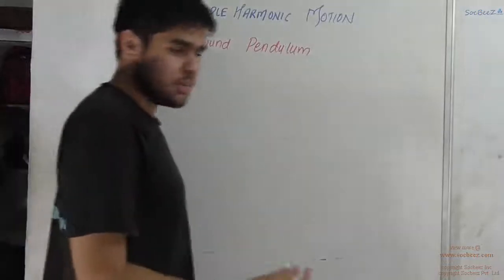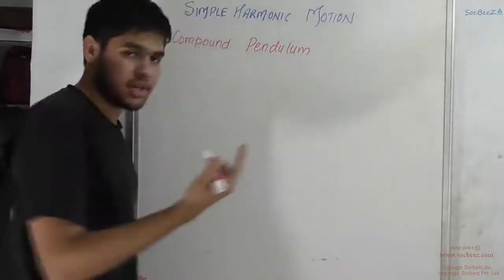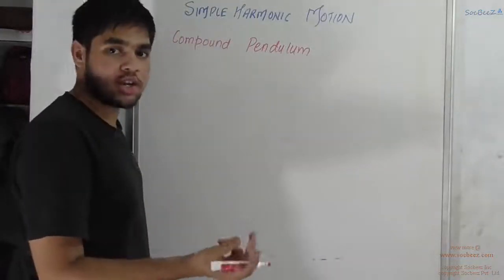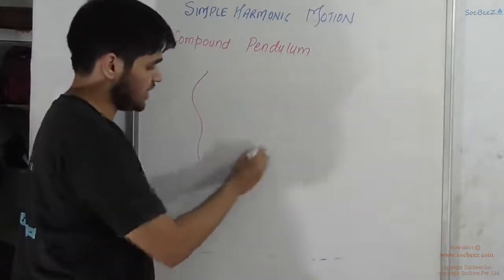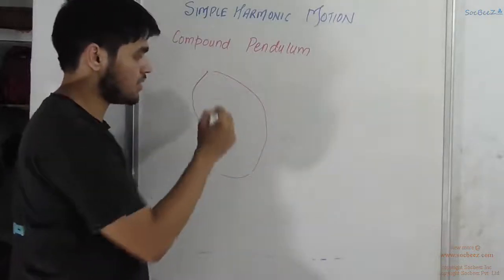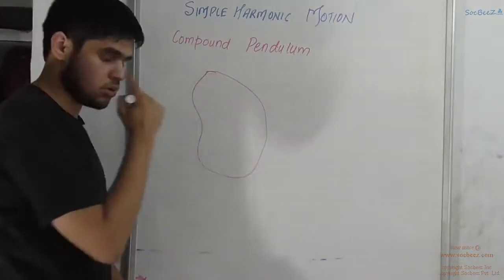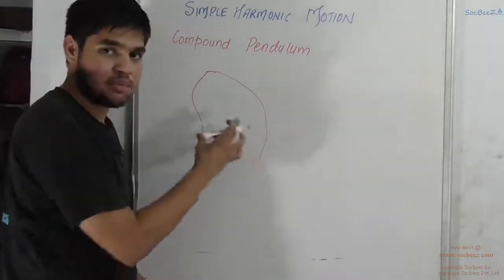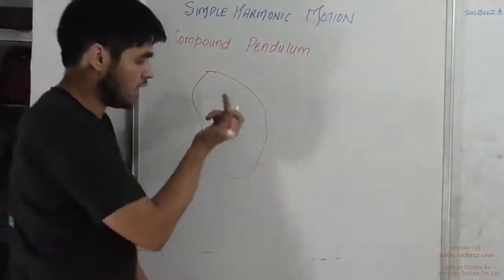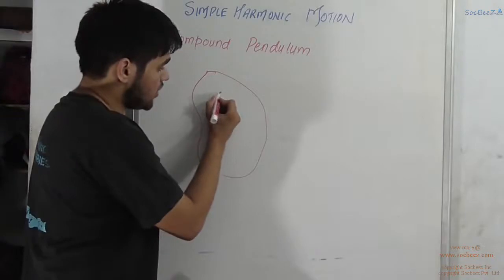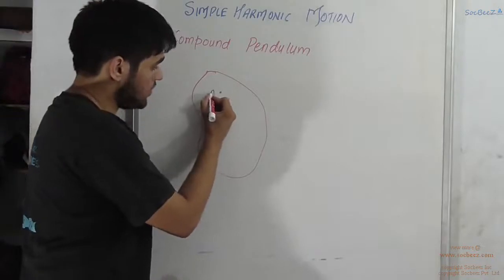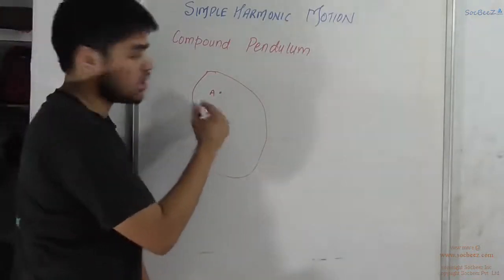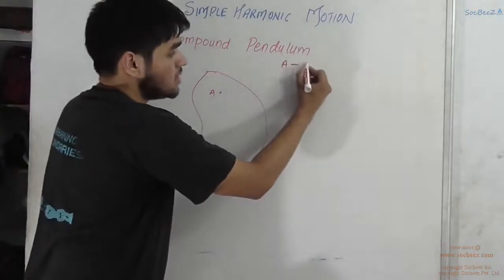So what is a compound pendulum? It is just a body — it may be 2D or 3D, of any shape. It can be a circle, a square, or any irregular shape. Here I am assuming an irregular shape, and suppose this is point A and it is hinged about this point.